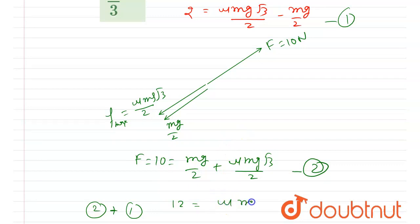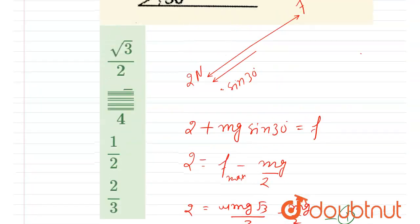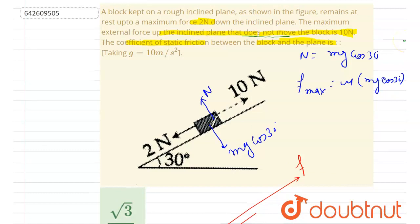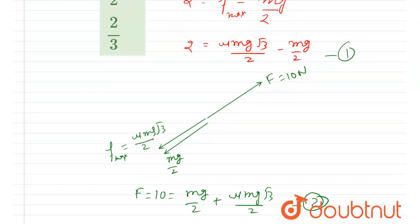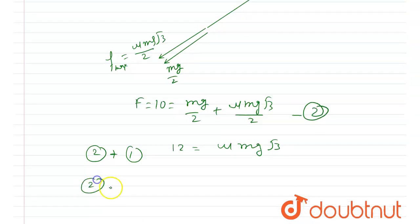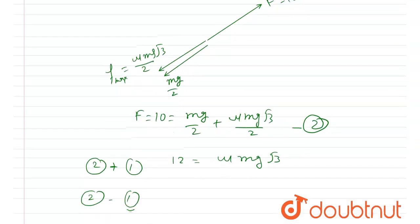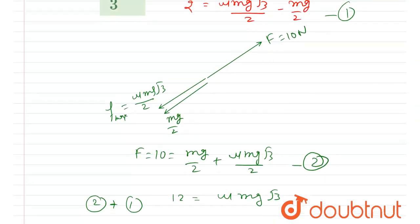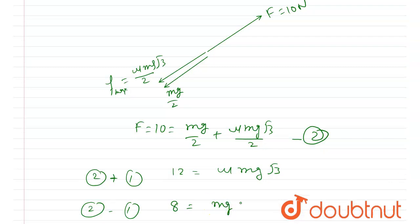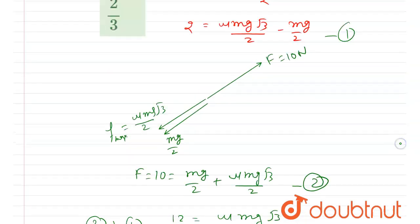Adding the two equations: on the left I get 12, and the mg/2 terms cancel out, giving μmg√3 = 12. Then subtracting equation 1 from equation 2: 10 − 2 = 8, the μmg·(√3/2) terms cancel, and I get mg = 8.